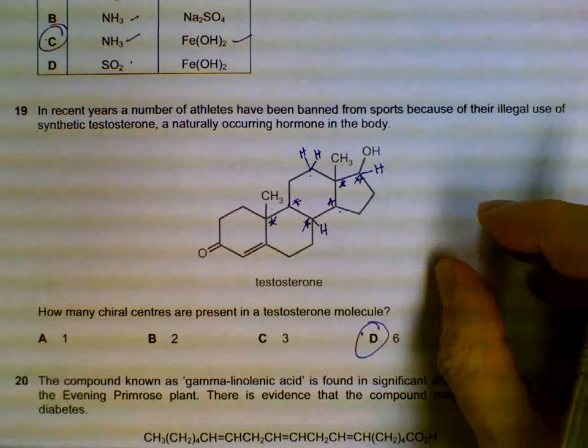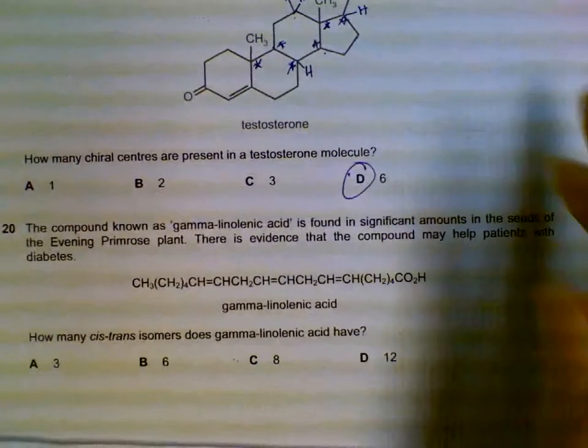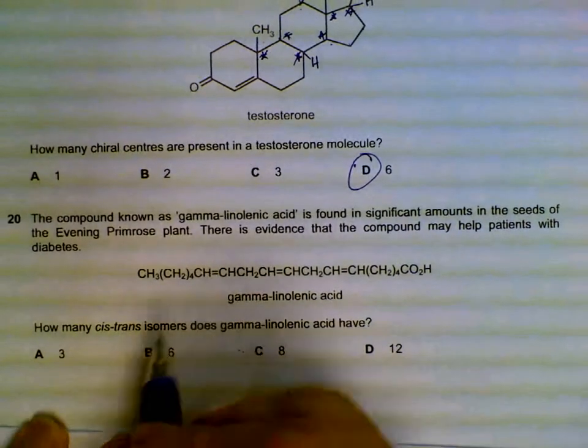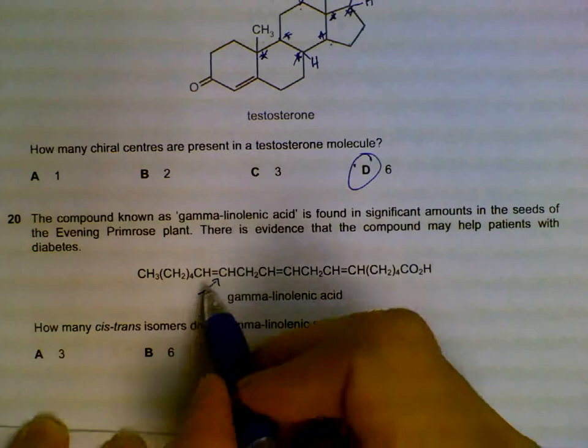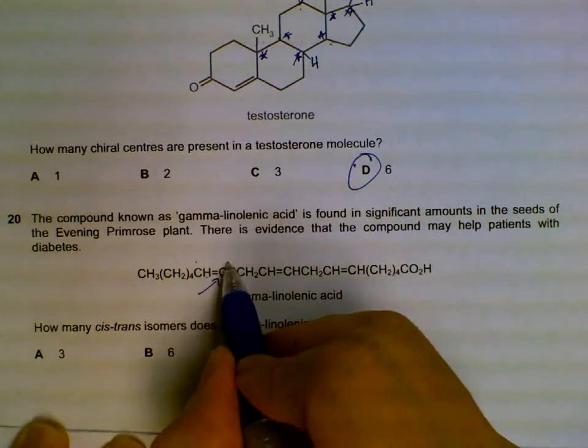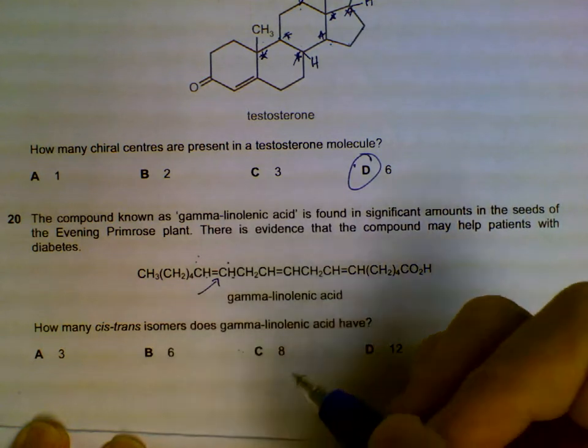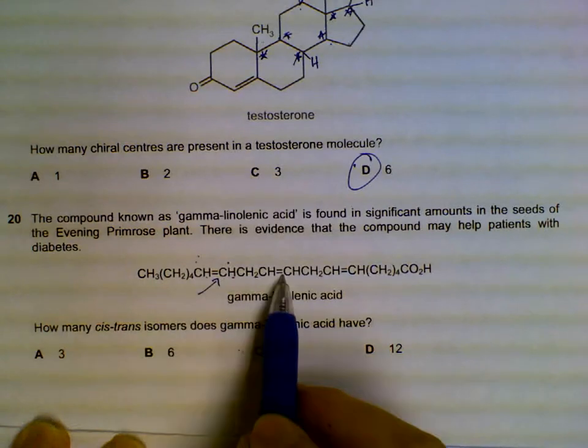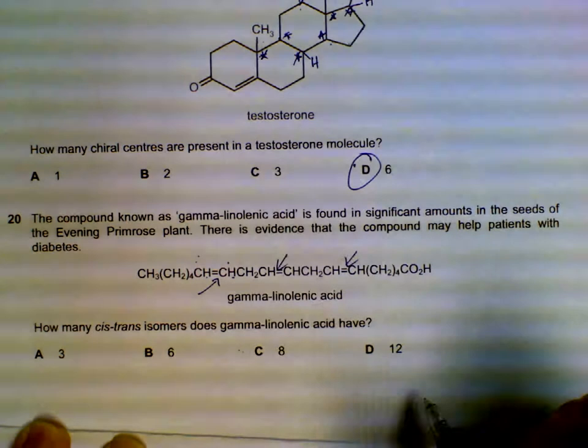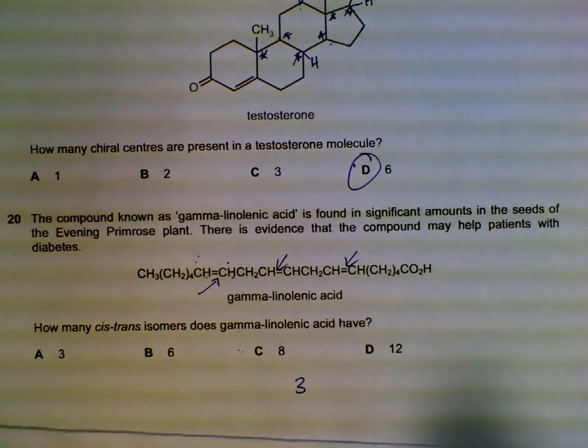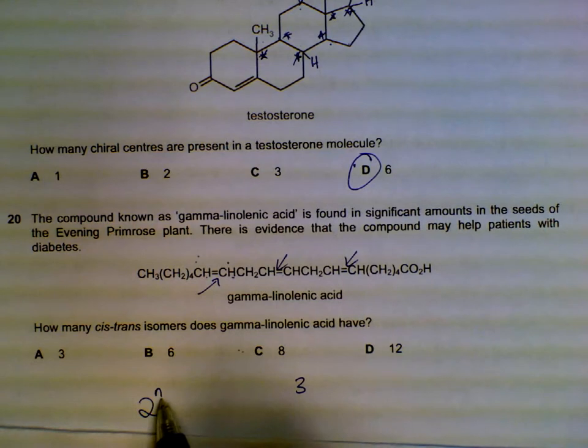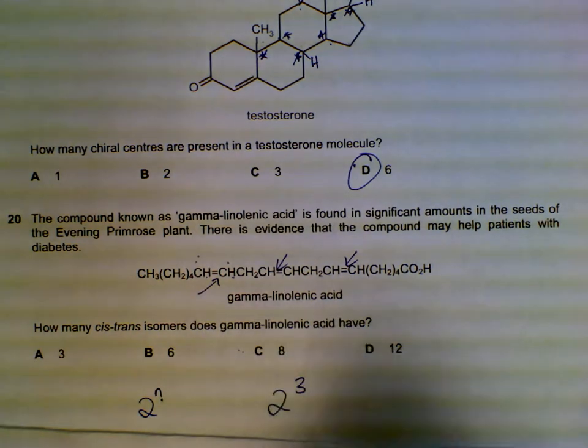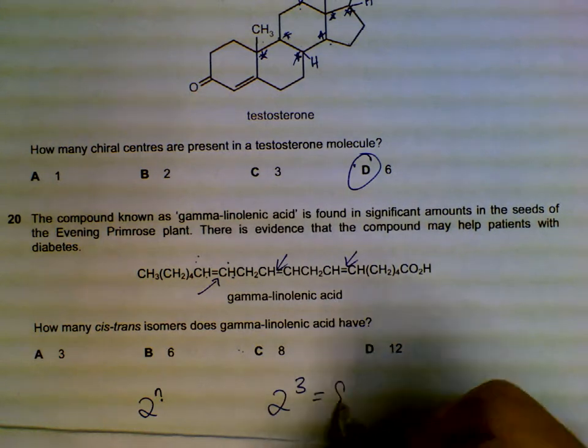Question 20: How many cis-trans isomers does this acid have? We look at the double bonds. There's H here - the H could be on the same side (cis) or on opposite diagonal sides (trans), so there's cis-trans possible here. There's also cis-trans possible at the other double bonds. We have three double bonds that could display cis-trans. To find the number of isomers, use 2^n where n is the number of areas - so 2^3 equals eight possible isomers.